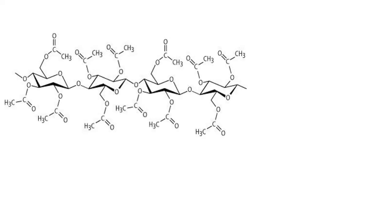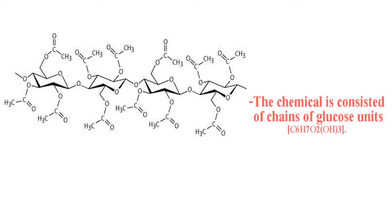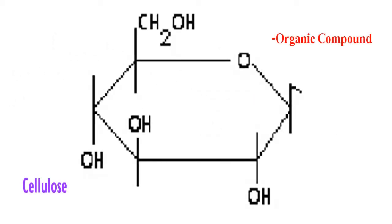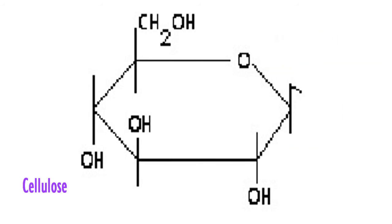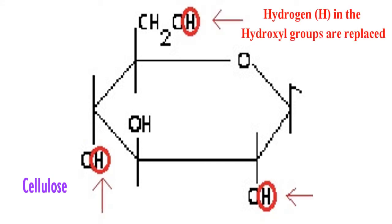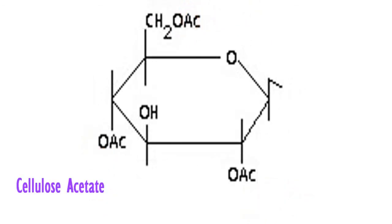Cellulose acetate is a rather complex molecule. It consists of chains and repeating glucose units with the formula C6H7O2(OH)3. To make things simpler, we would first need to look at the structure of cellulose itself, which is an organic compound that is the structural component of the cell wall in green plants. The hydrogens contained in the hydroxyl groups of cellulose are actually replaced by acetyl groups through a process called acetylation in order to obtain cellulose acetate.